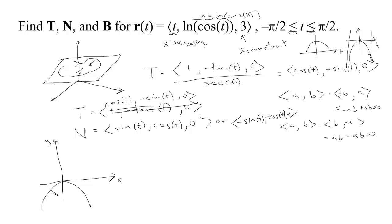Looking at the curve, the normal always needs to point inward — that's the direction we're turning. If we check the candidate (sine t, cosine t, 0) at t greater than 0, both sine and cosine are positive, so it points outward — that can't be the normal. So by geometric reasoning, the correct unit normal must be (minus sine t, minus cosine t, 0), which points inward in the direction of turning.